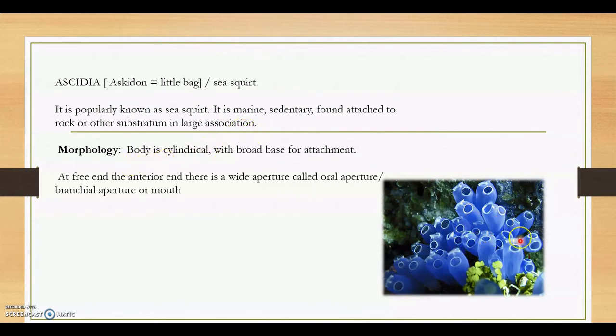In the picture you can see it has a cylindrical shape with a broad base for attachment. At the free end there is a wide aperture called oral aperture. You can see here two openings are there. This is called the oral aperture or brachial aperture or mouth. The other is called the atrial aperture. So there are two openings: mouth and atrial aperture, or brachial aperture and atrial aperture.